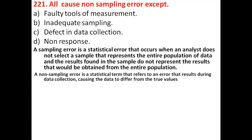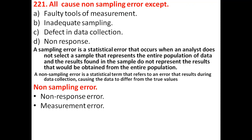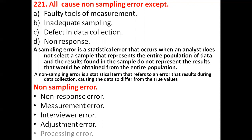A non-sampling error is a statistical term referring to an error that results during data collection, causing the data to differ from true values. Examples include measurement error, interviewer error, adjustment error, and processing error. Here, 'faulty tools of measurement' is a non-sampling error, but 'inadequate sampling' is a sampling error — it doesn't represent the population. So option B is the correct answer.